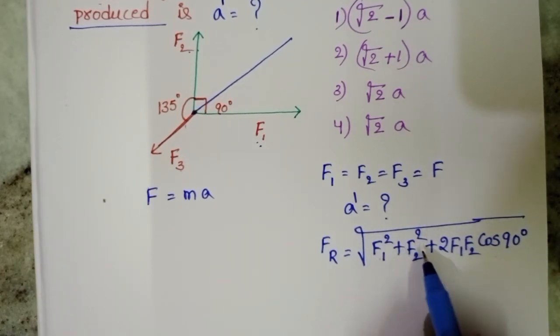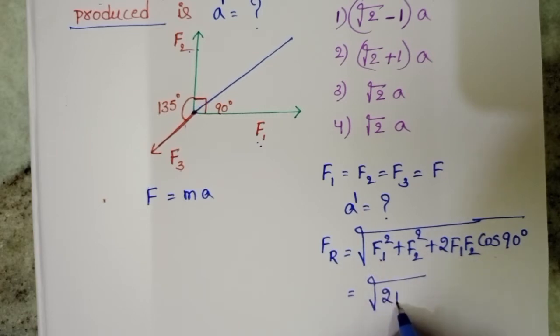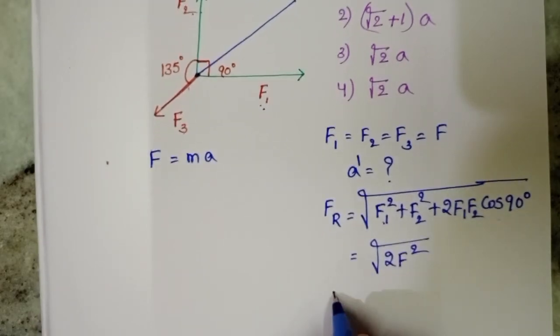And we know F1 equals F2. So now F squared plus F squared is 2F squared. The resultant force of F1 and F2 is root 2 F.